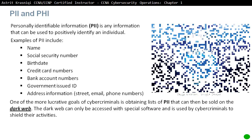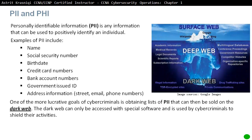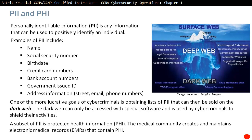Hackers really want to get access to PII. If they do get access to it, either they will use it for themselves or they can sell it — trading it on the dark web, where cyber criminals conduct their activities, accessible only through special software. A subset of PII is Protected Health Information, or PHI, used by the medical community.